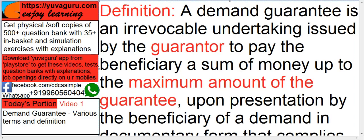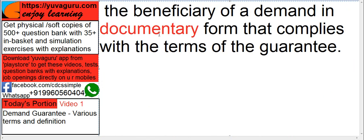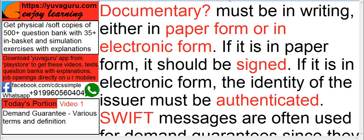Upon presentation by the beneficiary of a demand in documentary form that complies with the terms of the guarantee. Remember: documentary form — there should be documentary evidence of this guarantee. It should not be phonetic only. Documentary means it must be in writing. Writing means not only handwritten; it can be printed also. It can be in paper form or in electronic form. If we get a paper guarantee, then it should be signed and the signature should be verified by the bank.